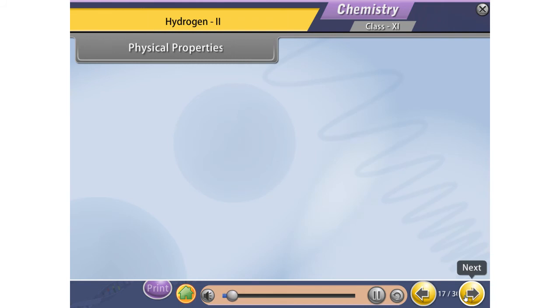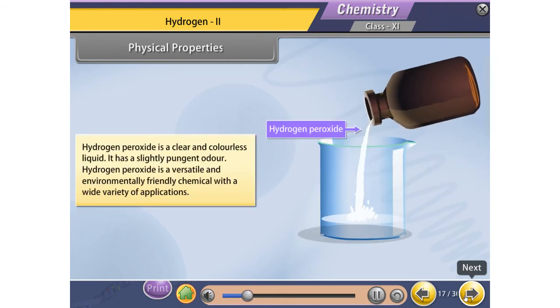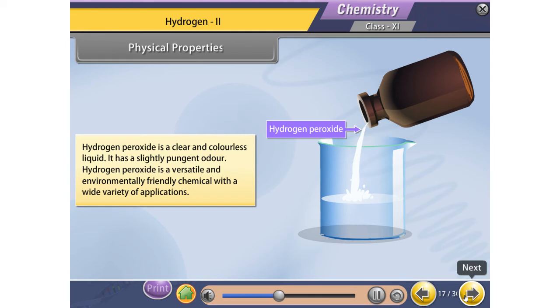Physical properties: Hydrogen peroxide is a clear and colorless liquid. It has a slightly pungent odor. Hydrogen peroxide is a versatile and environmentally friendly chemical with a wide variety of applications.